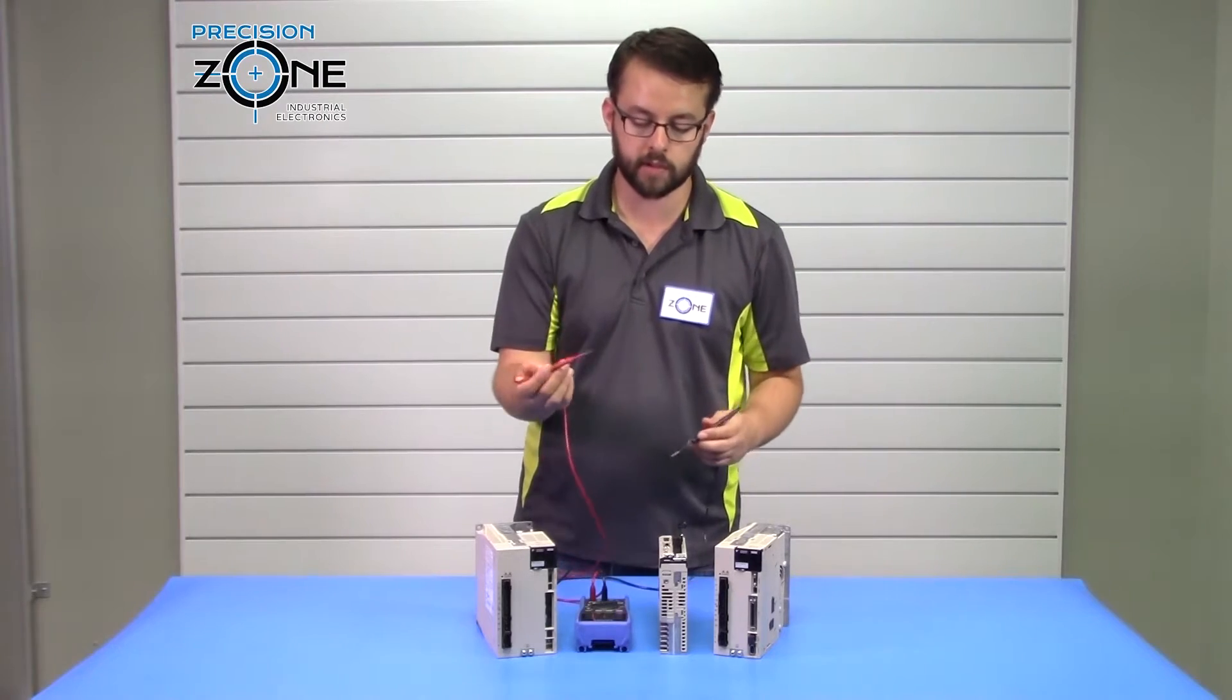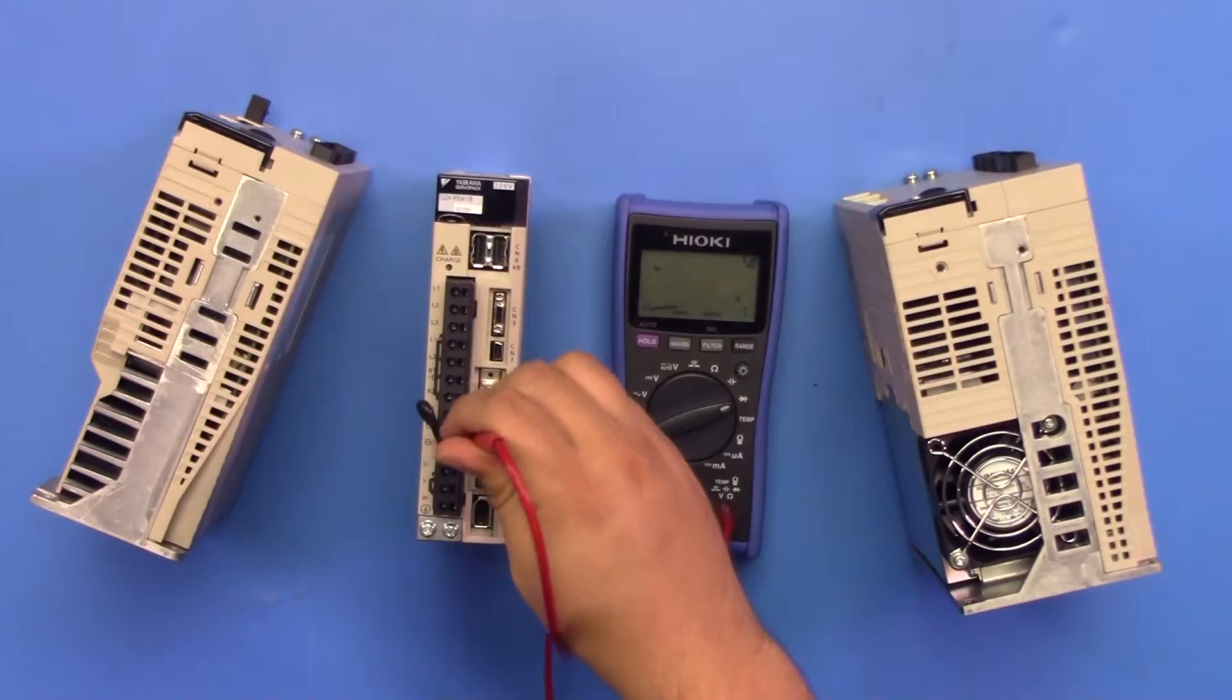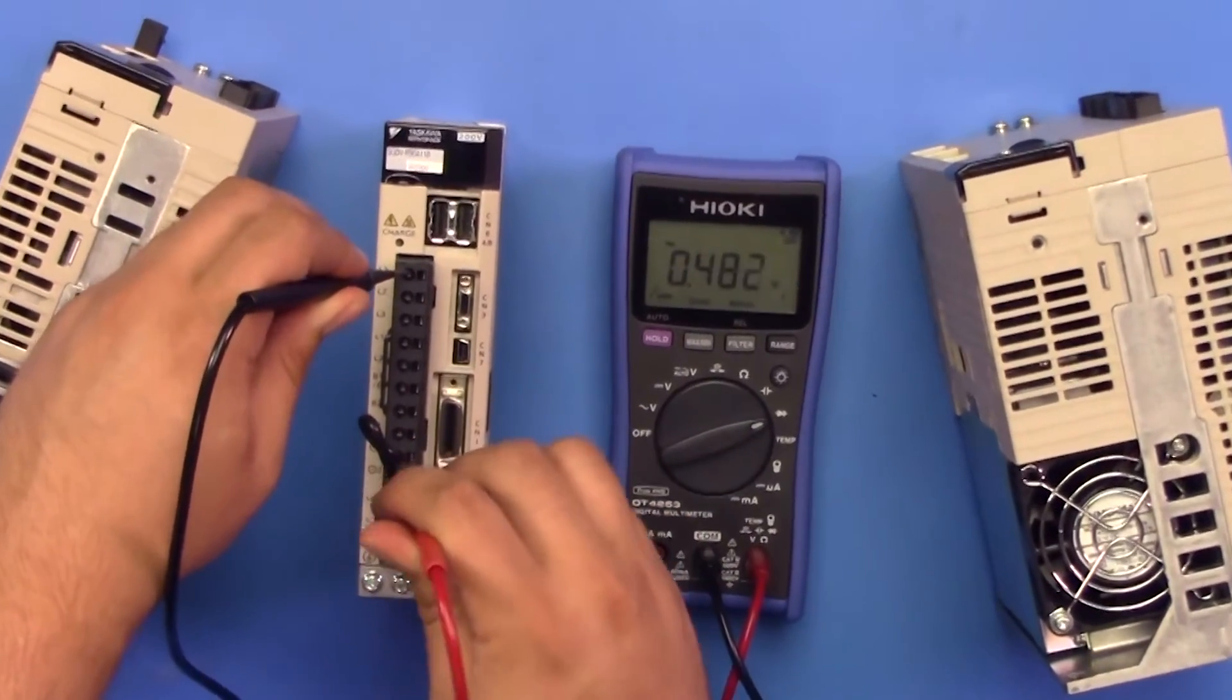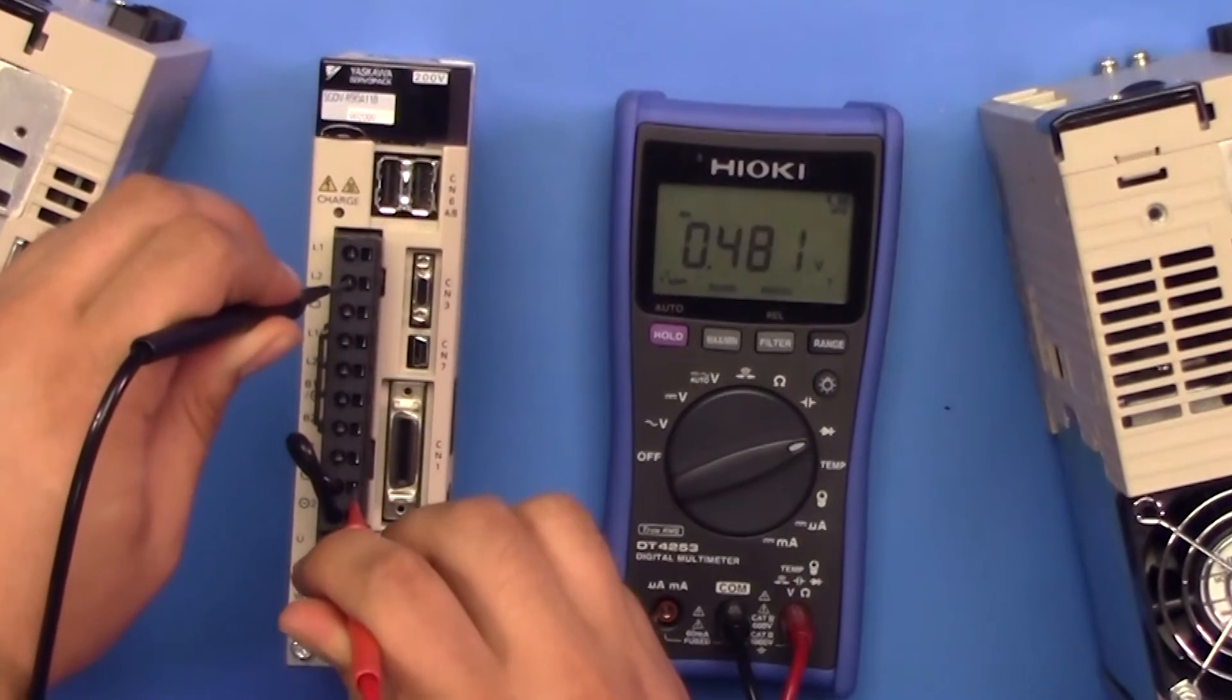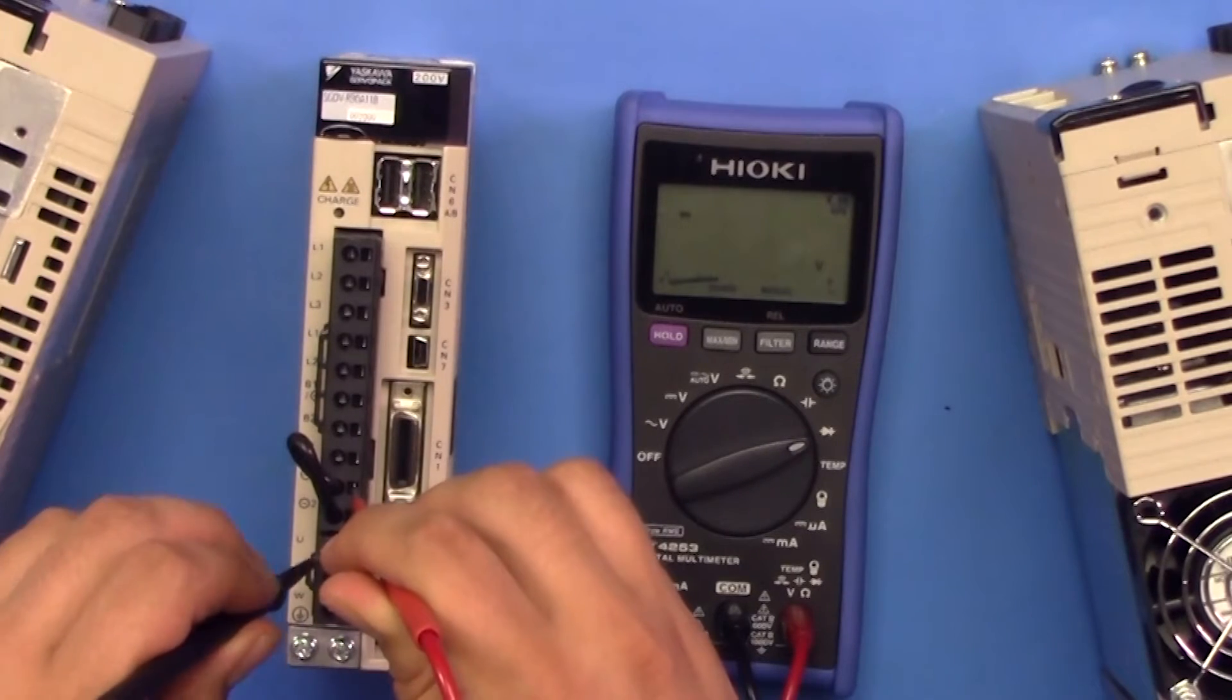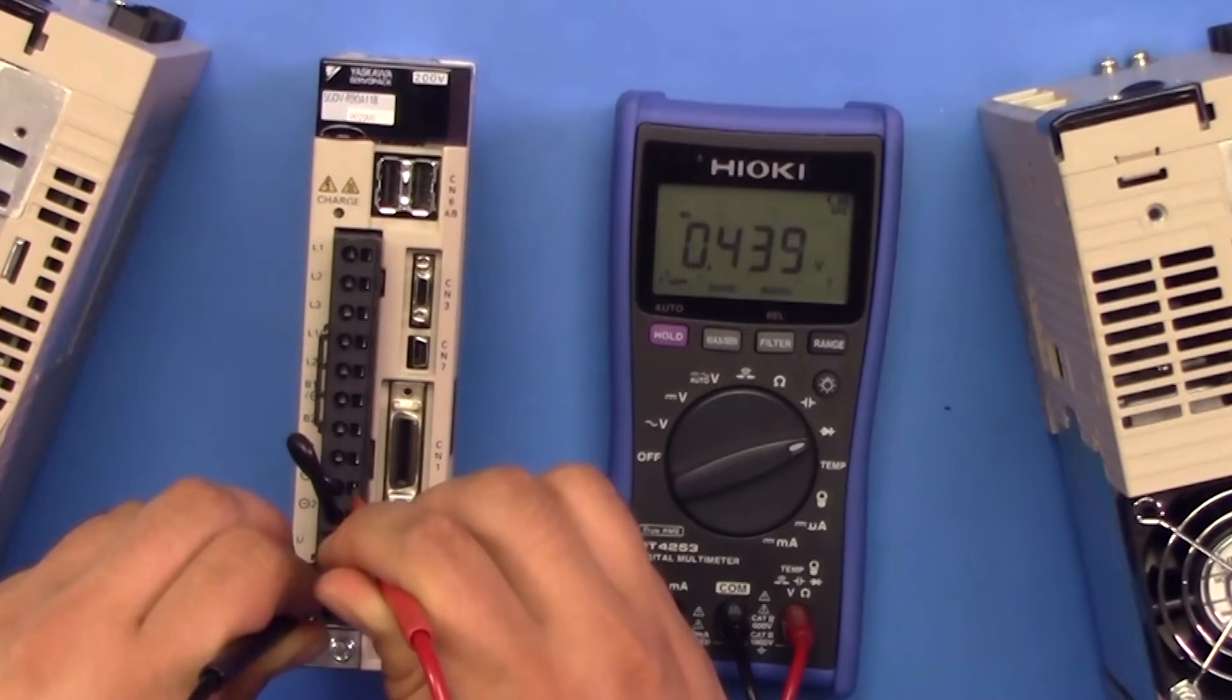Now you're going to want to switch. You're going to use the positive side of the digital multimeter and connect it to the negative side of the DC bus. And you can check your inputs at L1, L2, L3, which is 0.48 volts, and your outputs at UVW, which is about 0.44 volts.